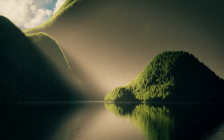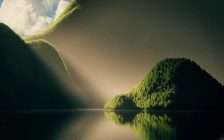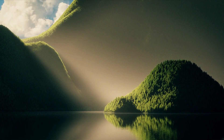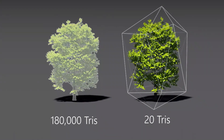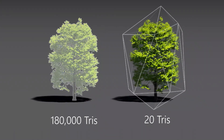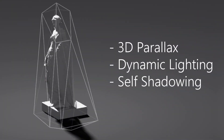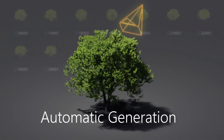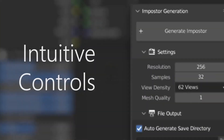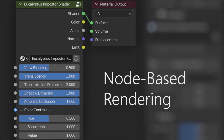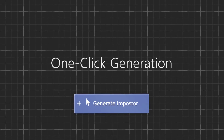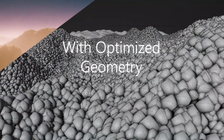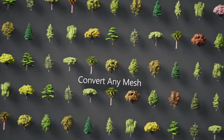With Instant Imposters, users can automatically convert any mesh into an optimized low-poly imposter, massively increasing performance in large-scale scenes. Using advanced shader-based rendering, the imposters display a detailed representation of the original mesh, utilizing 3D parallax, self-shadowing, and translucency to further replicate the details of the original object.